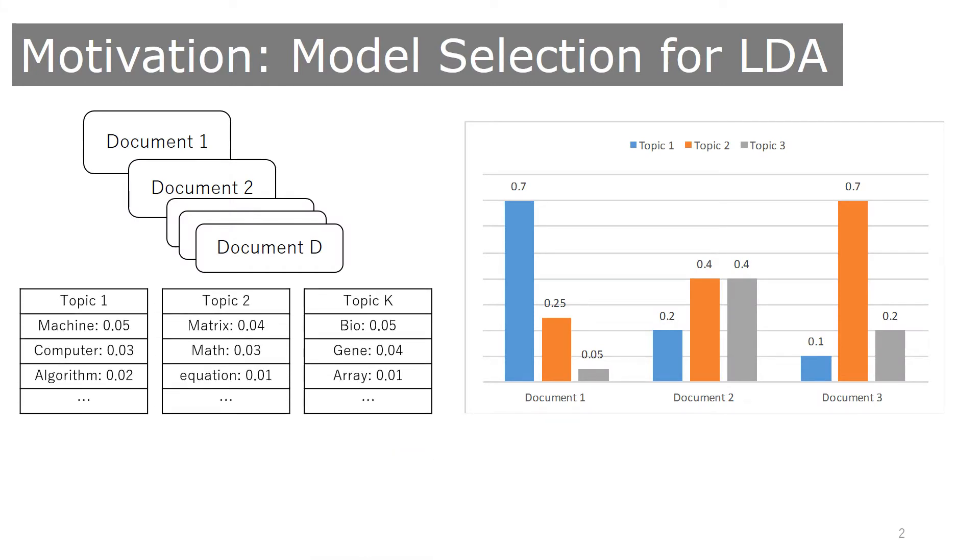For instance, in latent Dirichlet allocation model, you may be interested in selecting how many topics are included in the document.